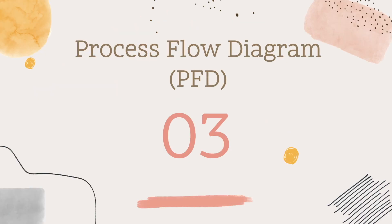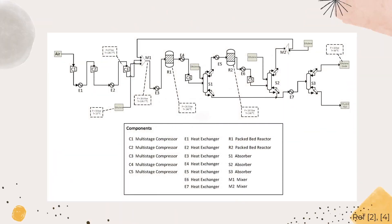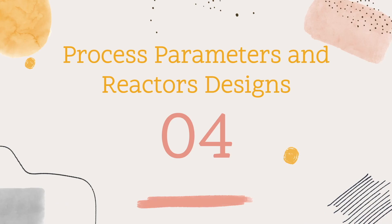The Process Flow Diagram (PFD) shows the process flow from collection of reactants to the reactor, separation, recycle, and finally the product stream and waste outputs.